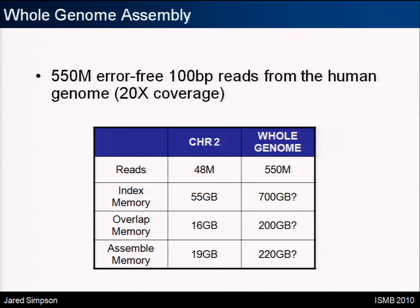Assembly of large genomes is a concern for practical projects. People want to sequence human genomes or vertebrates, and these algorithms need to be efficient. We are investigating how this algorithm scales. In the paper, we show results for chromosome 2. We need a few million reads to construct the index, about 55 GB. For a unique human genome, it would be close to 700 gigabytes. The index construction must first build the suffix array, which requires a large amount of memory. The overlap step took about six gigabytes, and the whole assembly step may take around two gigabytes for the entire human genome.